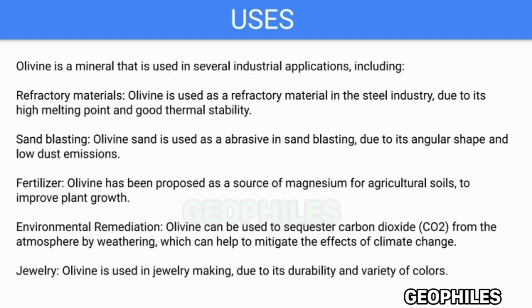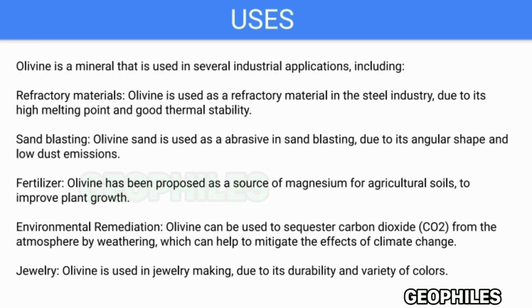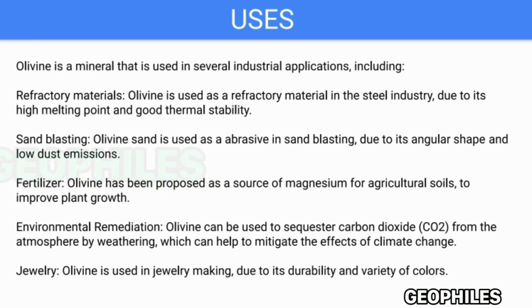Uses: Olivine is used in several industrial applications. As a refractory material in the steel industry, due to its high melting point and good thermal stability. Olivine sand is also used as an abrasive in sandblasting, due to its angular shape and low dust emissions.